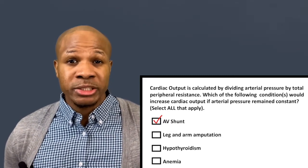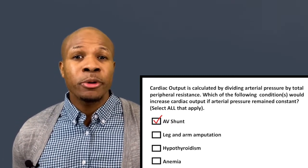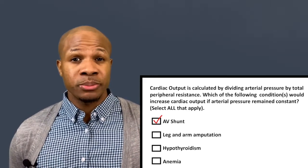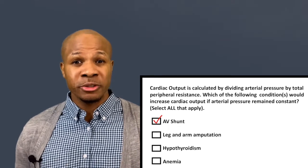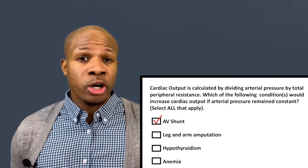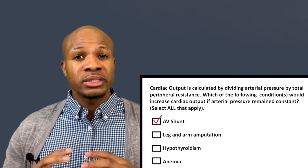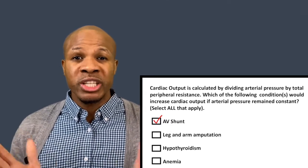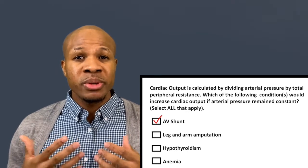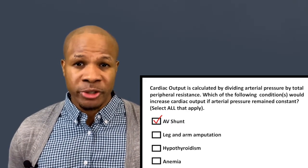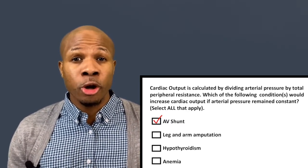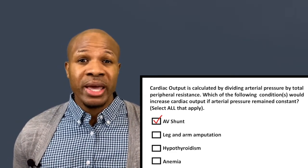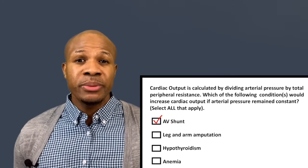Answer choice C says hypothyroidism. When it comes to the thyroid, it impacts metabolism. With hypothyroidism, things slow down — metabolism slows down, there is less requirement for blood flow, and instead of the arteries expanding to allow more blood flow, they constrict. This causes more peripheral resistance with hypothyroidism, leading to lower cardiac output. Not a correct answer.